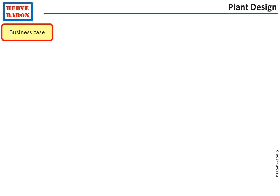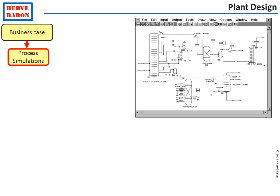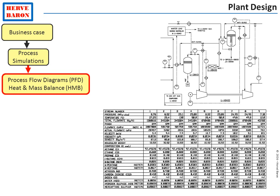It all starts with the functional requirements from business: the feedstock and the required products. The process engineers perform process simulations and develop process schemes in order to transform the feedstock into the required products. Upon completion of these simulations and once they have found the suitable process scheme, they issue the process flow diagrams and the heat and material balances. These documents form the basis for the plant functional description. The heat and mass balance allows to identify and specify the duty of each equipment.